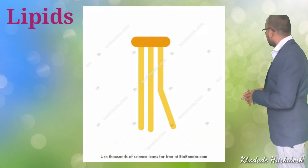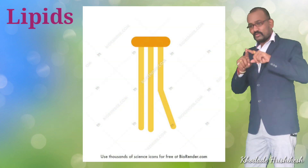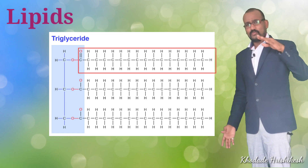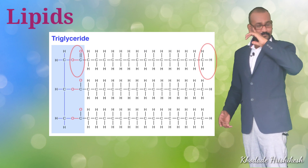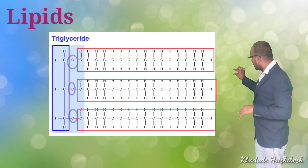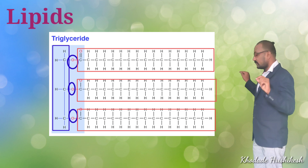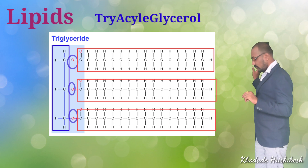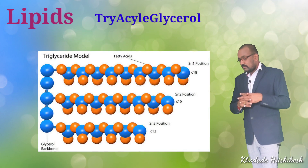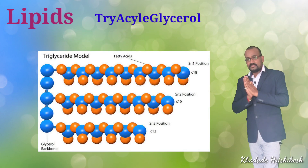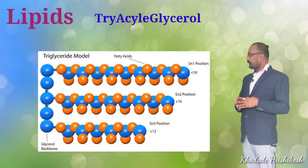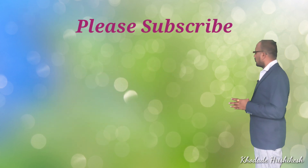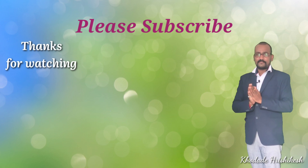To summarize today's lecture: we studied the TAG (triacylglycerol) — a glycerol molecule containing three fatty acids. Each fatty acid has a hydrocarbon chain with a methyl group at one end and a carboxylic group at the other. The glycerol and fatty acids are connected by ester bonds — three ester bonds per triacylglycerol. Today we covered storage lipids. In the next lecture we will study membrane lipids. Stay tuned and subscribe to the channel for notifications about new videos. Thank you.